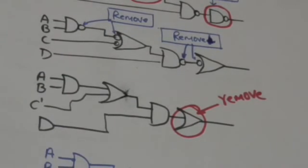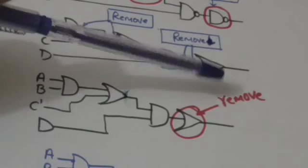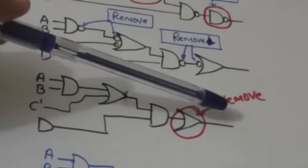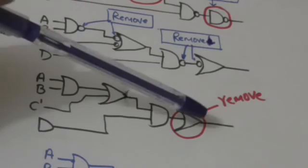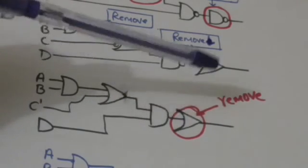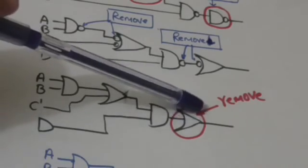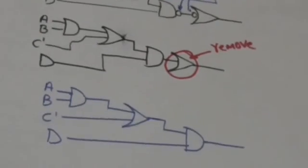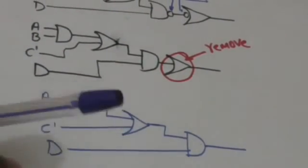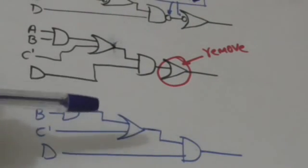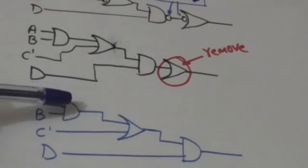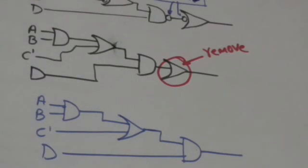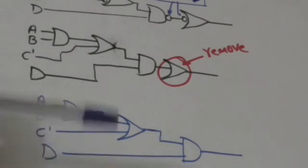Now look at this OR gate — we can remove it because the output of this OR gate is the same as its input. After removing it, we get the final logic diagram. This is an AND-OR logic diagram. In this way we can convert a NAND logic diagram into an AND-OR logic diagram.